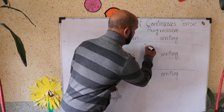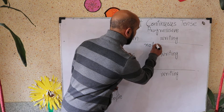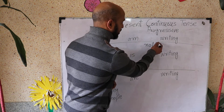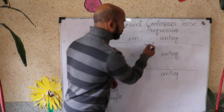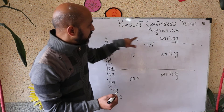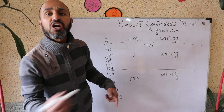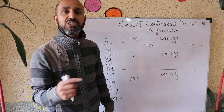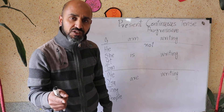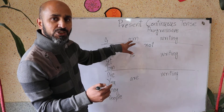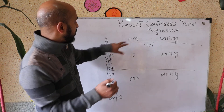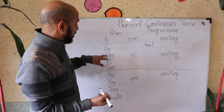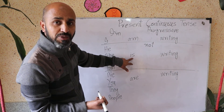When making negatives, you just have to add 'not' in the middle of 'am/is/are' and the -ing verb. For example: I am not writing. Note that 'am' contracts with 'not' differently — you say 'I'm not writing', not 'I amn't writing'. You cannot say 'I amn't'.